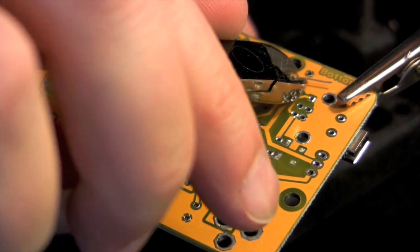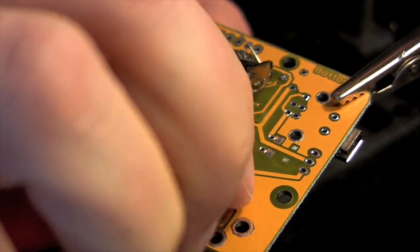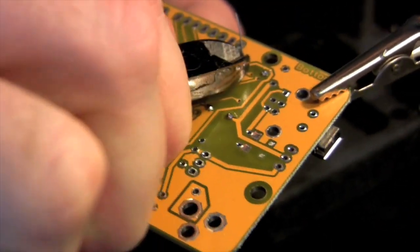After you're done soldering, trim any excess from the components. Or, if you're like me and you're a monkey, trim the legs you should have trimmed in the first place.